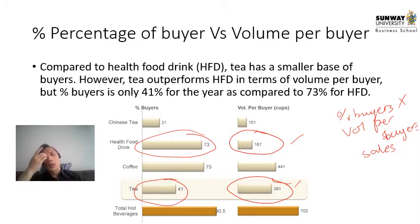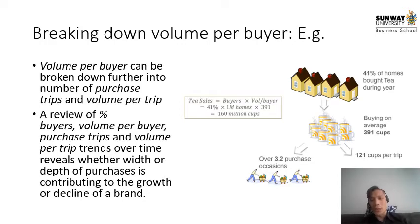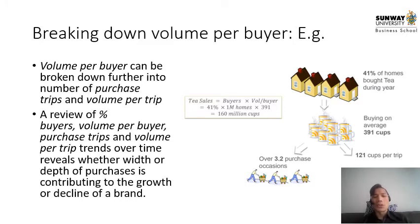Breaking down volume per buyer further: volume per buyer equals number of purchase trips times volume per trip. For example, 121 cups per trip times 3.2 purchase occasions gives 391 cups. With 41% of 1 million homes buying tea, that gives 160 million cups altogether. Reviewing percentage of buyers, volume per buyer, purchase trips, and volume per trip trends over time reveals whether the width or depth of purchases is contributing to the growth or decline of a brand.